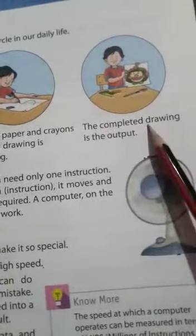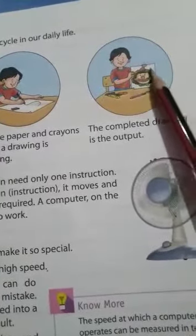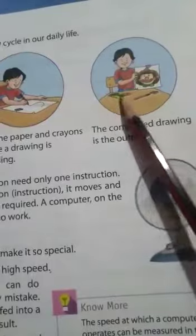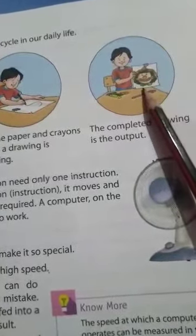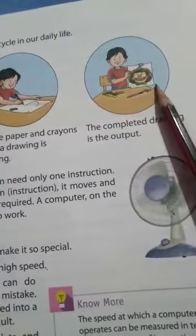Next one is the complete drawing is the output. Now he completes his drawing and that is called output because it shows the result. Whatever result we get is called the output, so it's output.